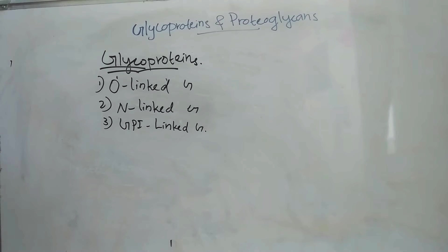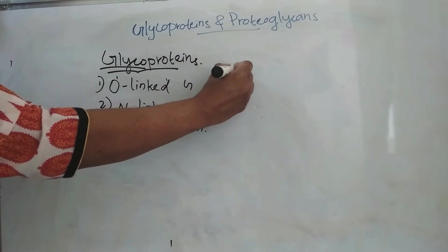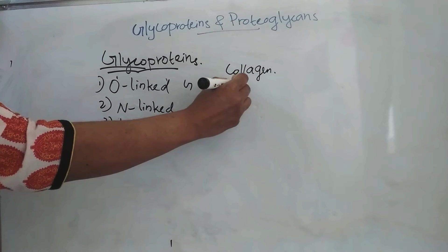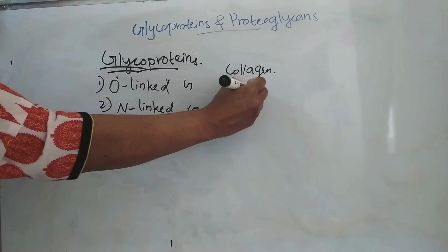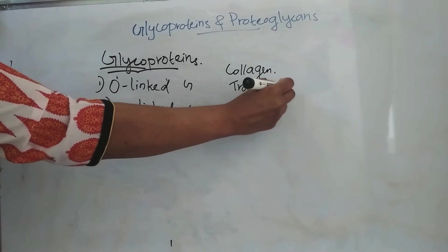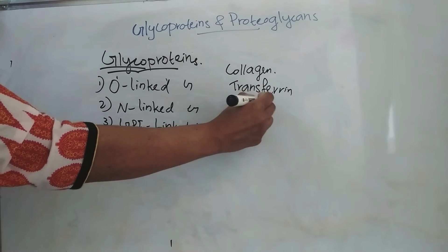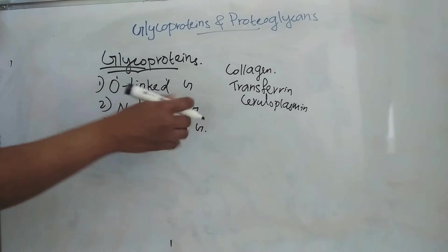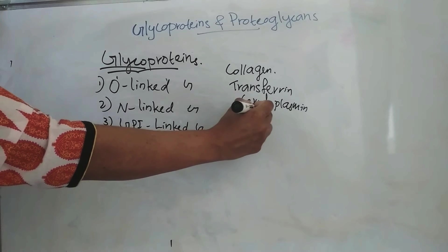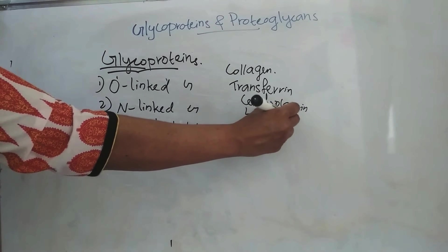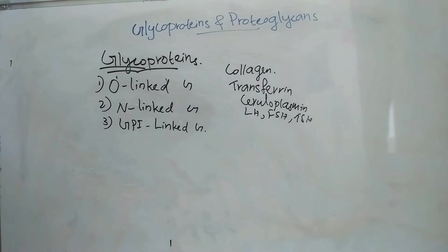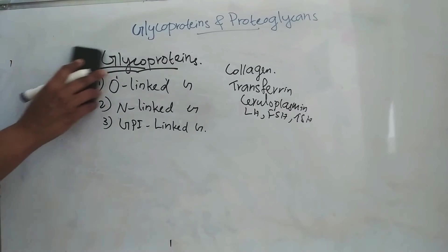Major biologically important glycoproteins include collagen, then transferrin and ceruloplasmin, then hormones like LH, FSH, and TSH, and then blood group substances. These are the biologically important glycoproteins. So that is about glycoproteins.